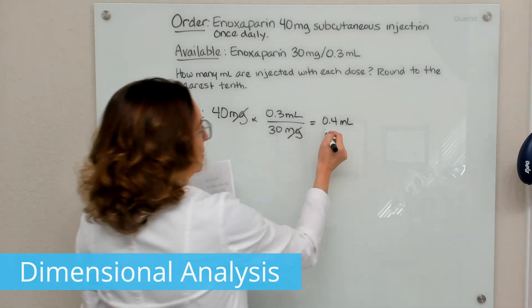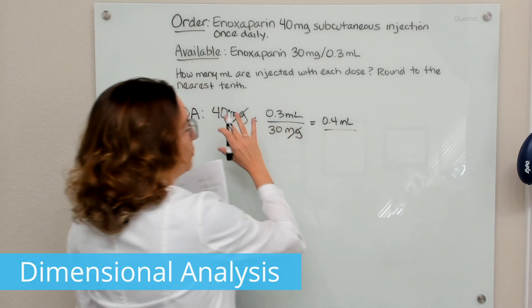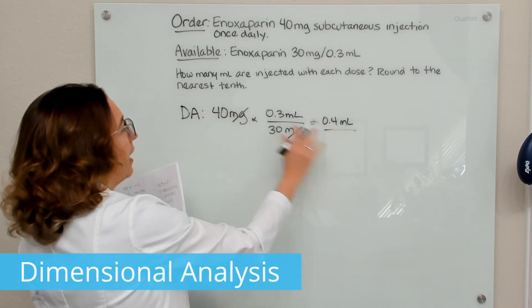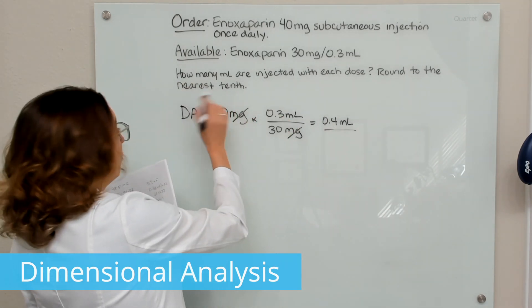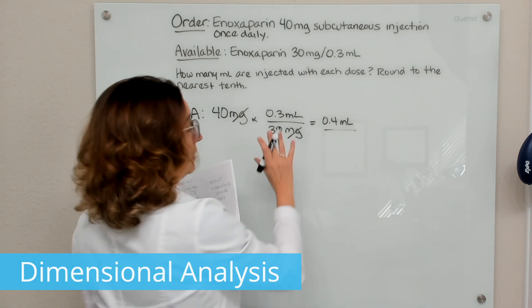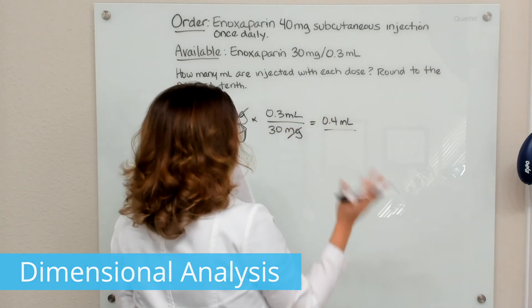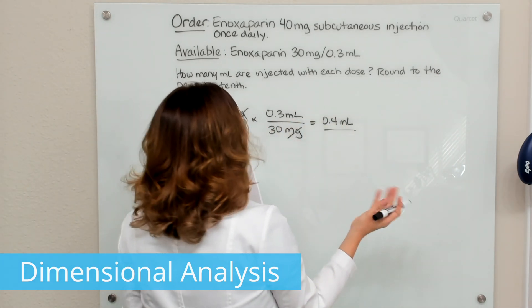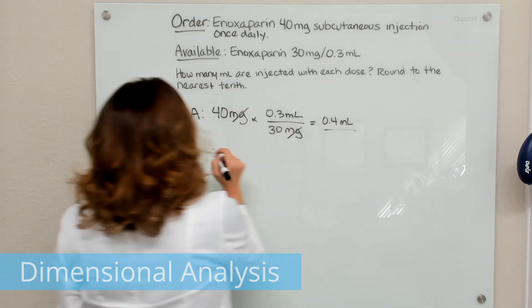When we multiply this out, we end up with 0.4 milliliters. That answer is already rounded to the nearest tenth, so we don't need to do any additional rounding.